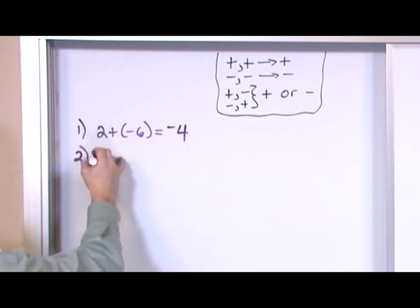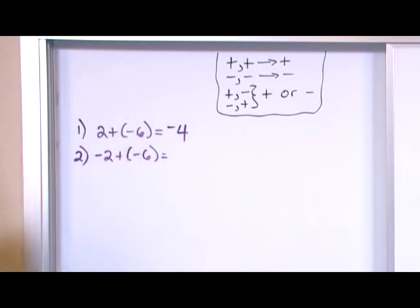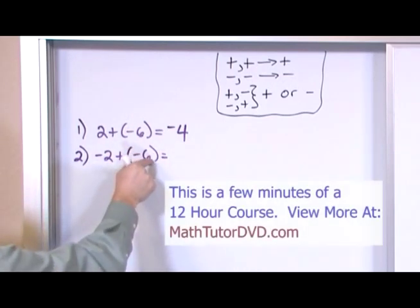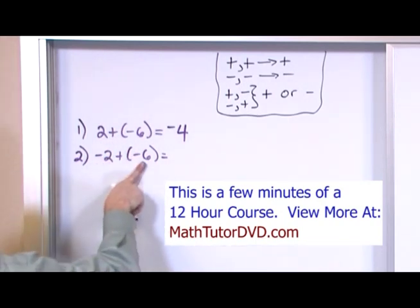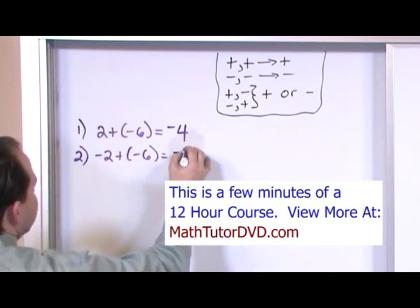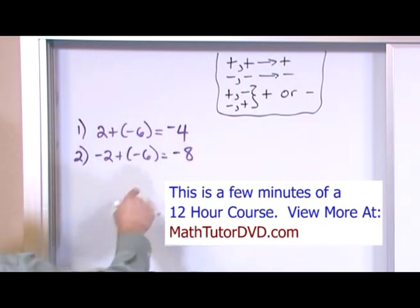Next problem. Negative 2 plus negative 6. So here I have a negative plus another negative number. That's the other case where I already borrowed something and I borrowed some more stuff. So the answer is negative 8, because 6 plus 2 gives me 8. Negative plus negative always gives me negative.